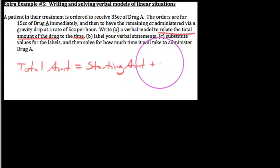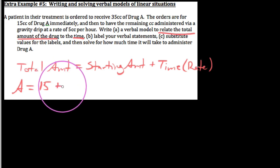Plus the amount of time times the rate. In other words, we could look at it this way: total amount of the drug, we'll call this A, would be the same thing as the starting amount—we got 15 cc's right off the bat—plus however many hours we have at 5 cc's per hour. So 5 cc's per hour times the number of hours. That's how we'd find out how much has been given.